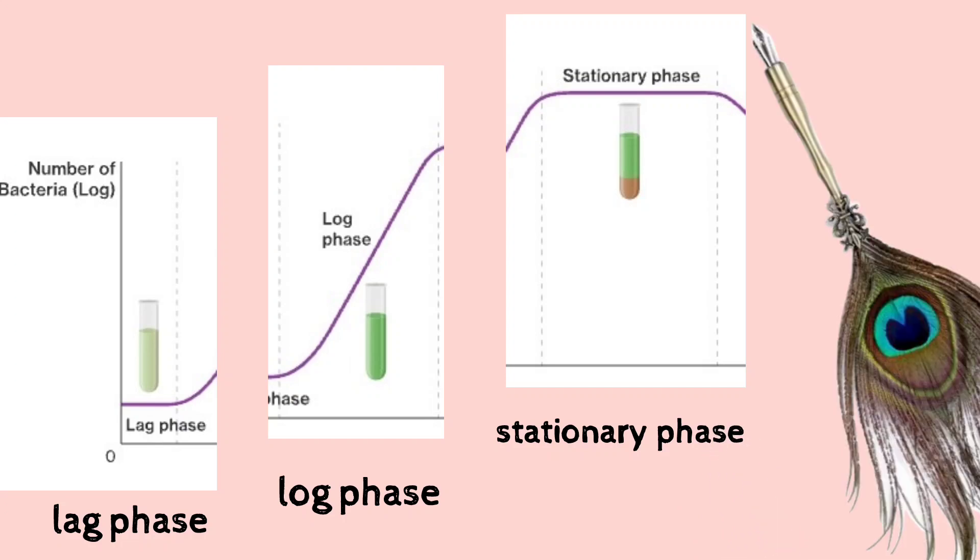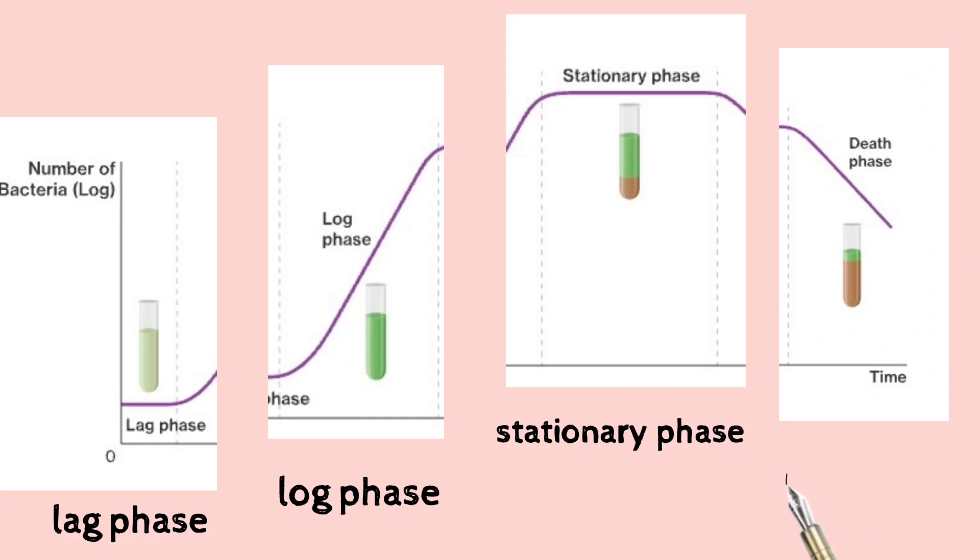Now the fourth phase is the death phase. As the limiting factors intensify in the medium, cells will die exponentially. The way cells start growing exponentially in the presence of fresh nutrient, the death phase is the time where the cells start dying exponentially because a lot of toxic waste starts piling up.